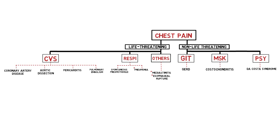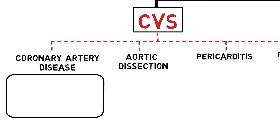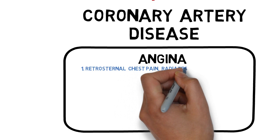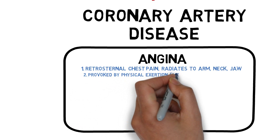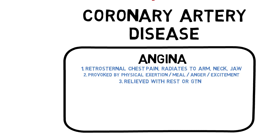Now let's elaborate each type of chest pain according to each cause. Chest pain due to coronary artery disease is called angina. There are three characteristics that define angina according to Parveen Kumar and Michael Clark. The pain is retrosternal, radiates to the arm, neck, or jaw. It is provoked by exertion, mild anger or excitement, and is relieved with rest or glyceryl trinitrate. All these components describe classical angina. Lacking any of these can indicate atypical angina or non-angina.